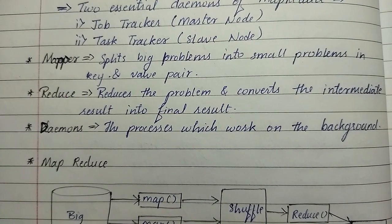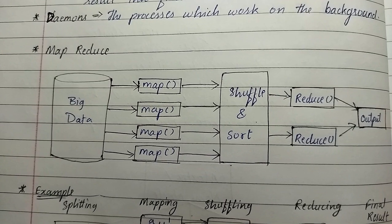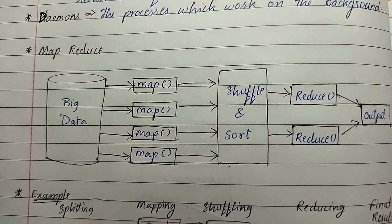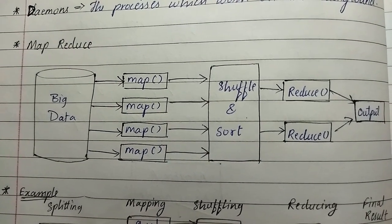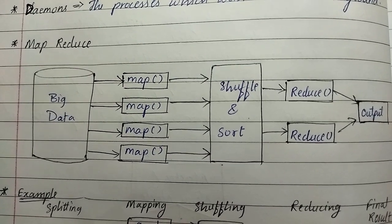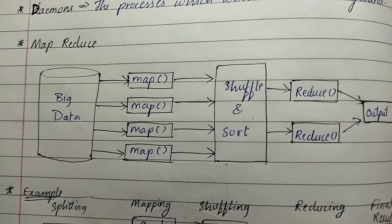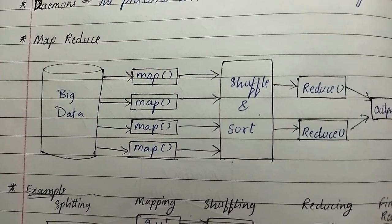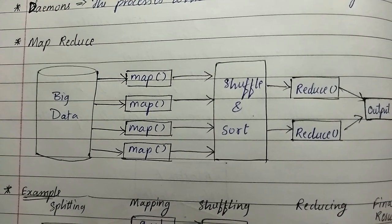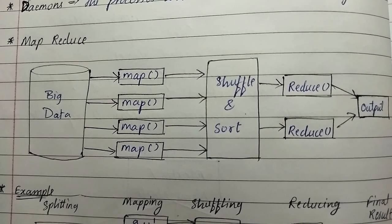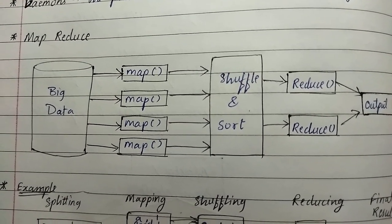Daemons are nothing but processes which work in the background. In MapReduce, we give big data as input, then mapping happens. After mapping, it goes to shuffle and sort. After shuffle and sort, the sorted results are reduced to more precise output, and then after the reduce we get the final output.